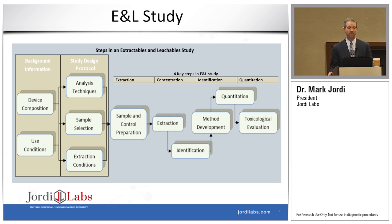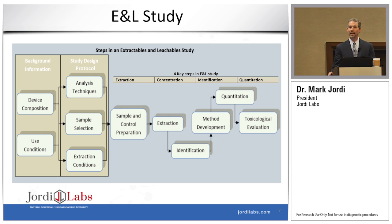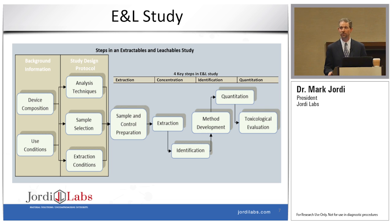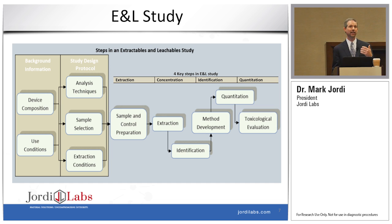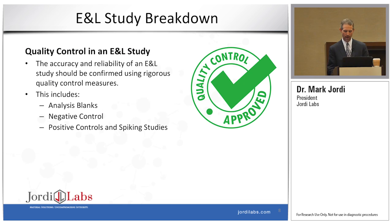After we have gathered that background information, we then decide on which samples and controls we're going to use. We'll then extract them, identify the things that came out, and do method development to identify quantitative strategies for those compounds. We'll then validate that and go on to do the quantitation. And finally, we'll do a toxicological evaluation to ask the question: how dangerous are those chemicals that were found to leach?